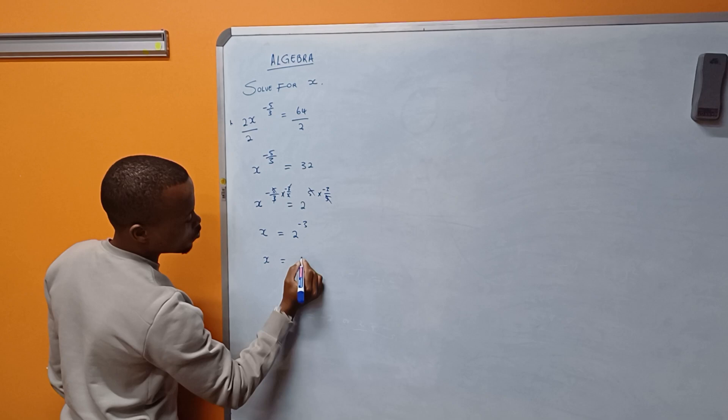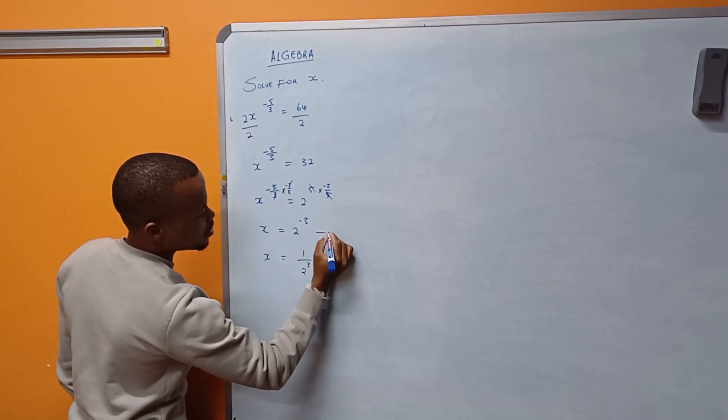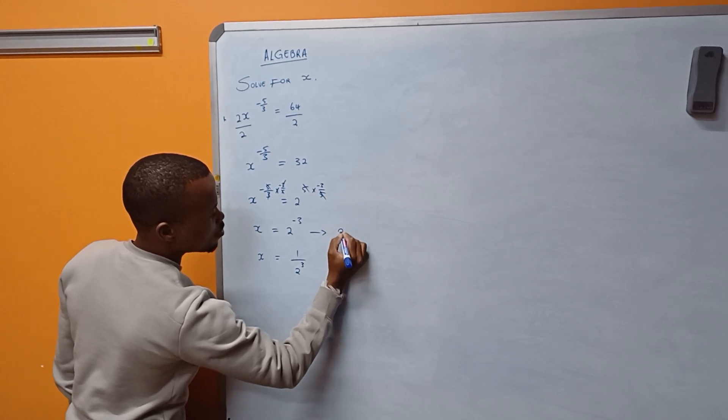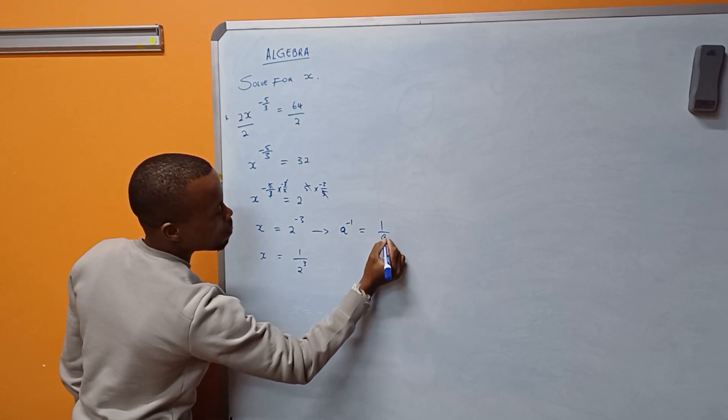As a result, x is equal to 1 over 2 to the power of 3. This is by laws of exponent that states that if you have alpha to the power of minus 1, it is equal to 1 over alpha.